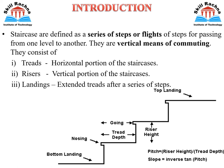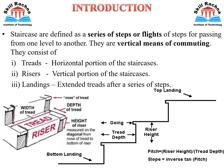A staircase is defined as a series of steps or flights for passing from one level to another in a building. They are basically a vertical means of commuting. They consist of various components like treads — the horizontal portion of the staircase, including the width and depth of the tread — and risers, which are the vertical portions. Then there are landings, which are the extended tread after the series of steps, as we can clearly see in the diagram.